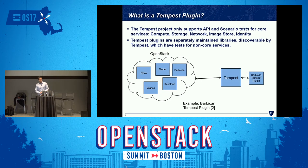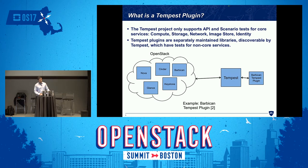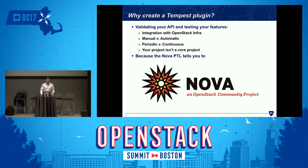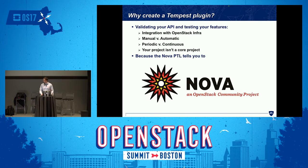So what's a Tempest plugin? A Tempest plugin is a little helper project for Tempest. If you have a project that's outside of the big tent — I use Barbican as an example here because I implemented the Barbican Tempest plugin — you would implement one of these plugins to work alongside Tempest to test the functionality supported by your service. This is in response to the Tempest project narrowing its scope to the core services. Why would you create one? It's a good way to make sure your API still works, your features still work, and that no one merges code that would break either of those things. In my case, I made the Barbican Tempest plugin because the Nova PTL told me to.